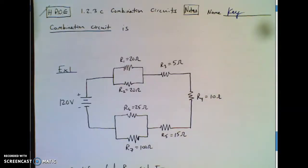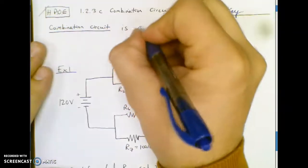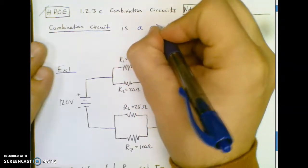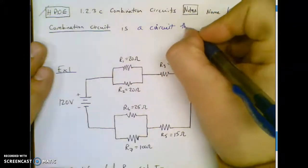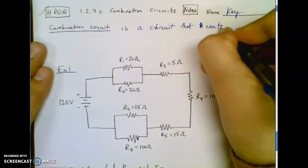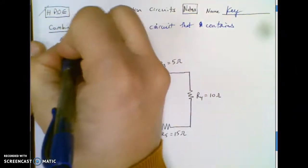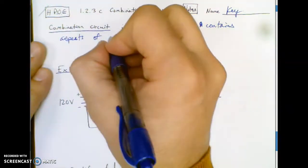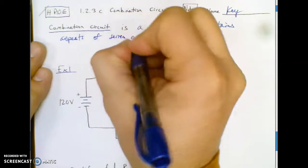Hey folks, this is the first video on doing combination circuits. So a combination circuit is a circuit that contains aspects of series and parallel.